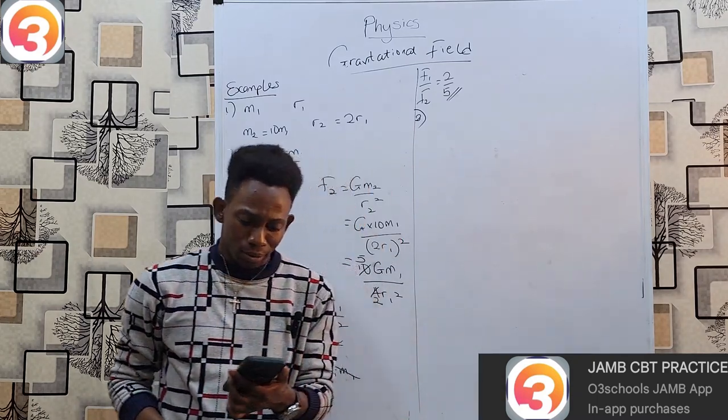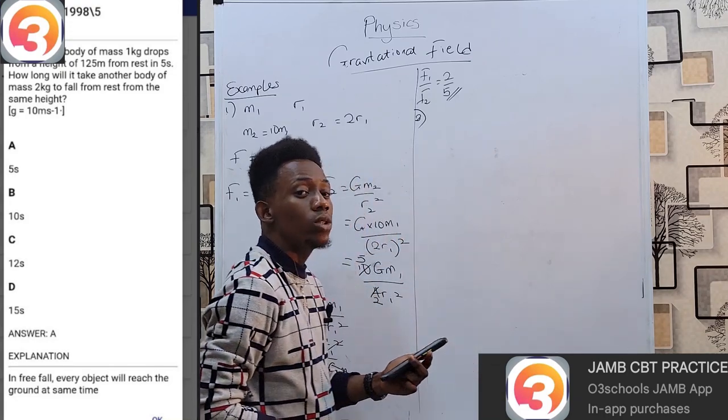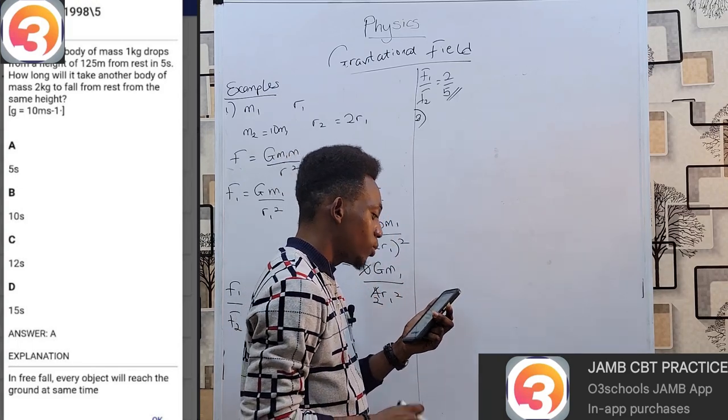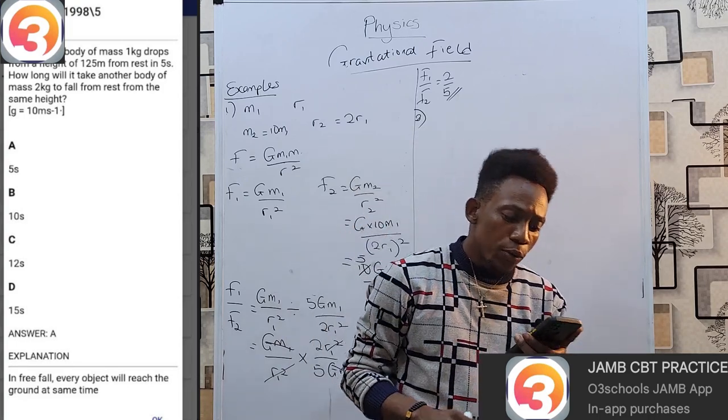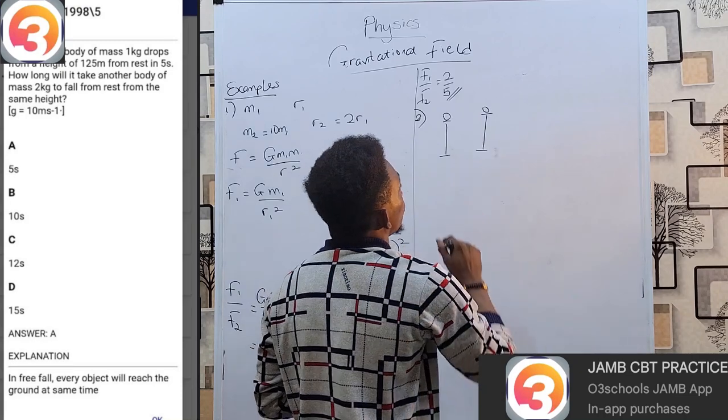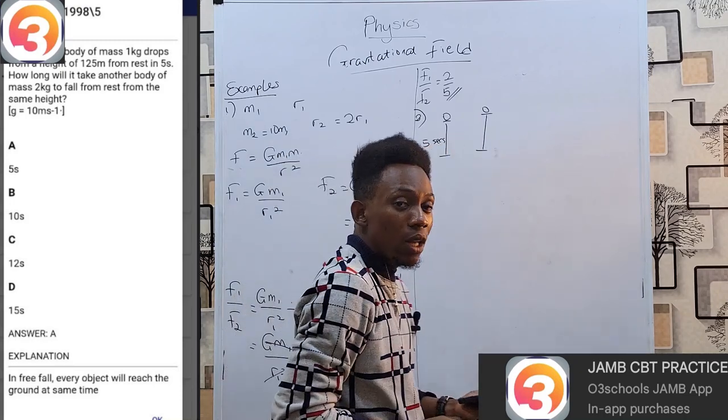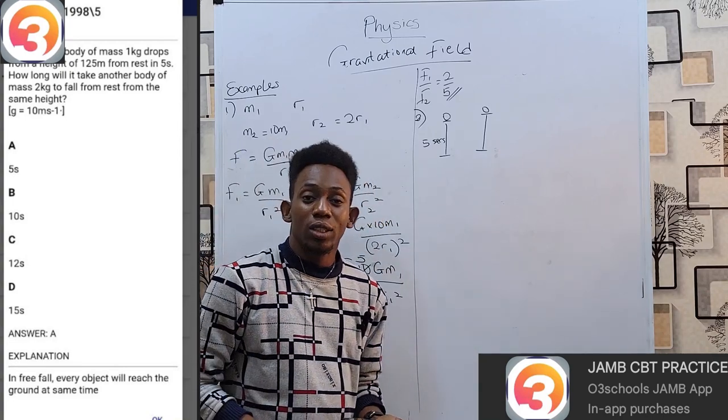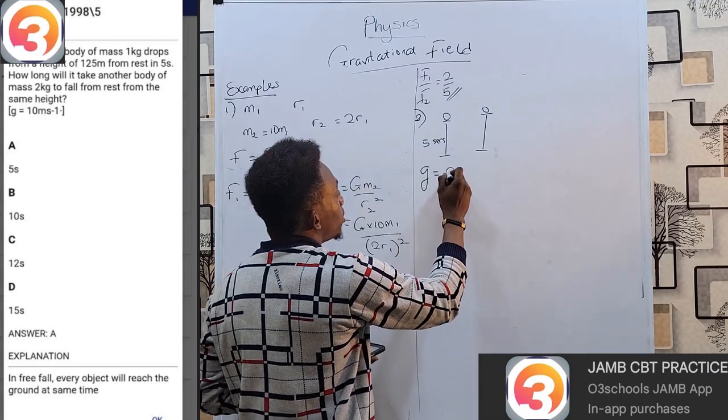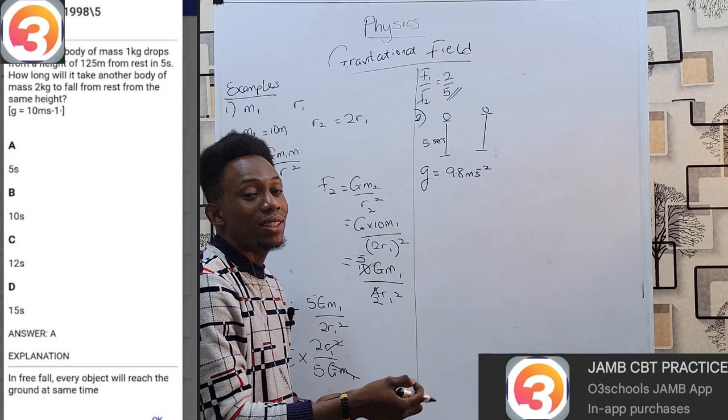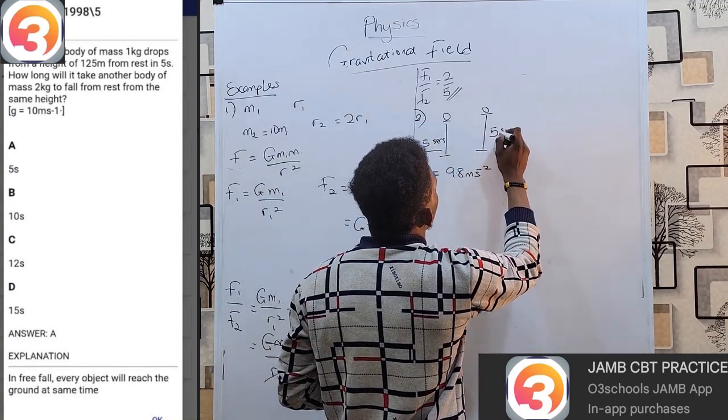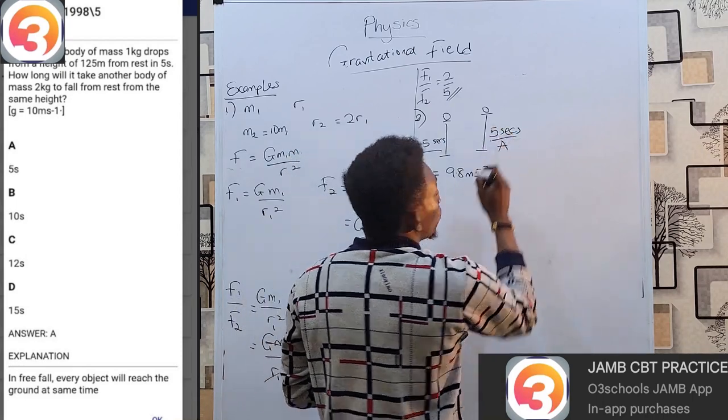In this question we don't even need to calculate. 1998 question 5. In free fall, a body of mass 1 kg drops from a height of 125 meters in 5 seconds. How long will it take another body of mass 2 kg to fall from rest from the same height? This question tells us we are dropping two different objects from the same height. How long will it take the second one to fall if the first one falls in five seconds? What you must remember: what makes you fall down to earth, what attracts it to earth, is gravity. And the intensity of this attraction is given by acceleration of gravity g, of which you know that the average value is 9.8.